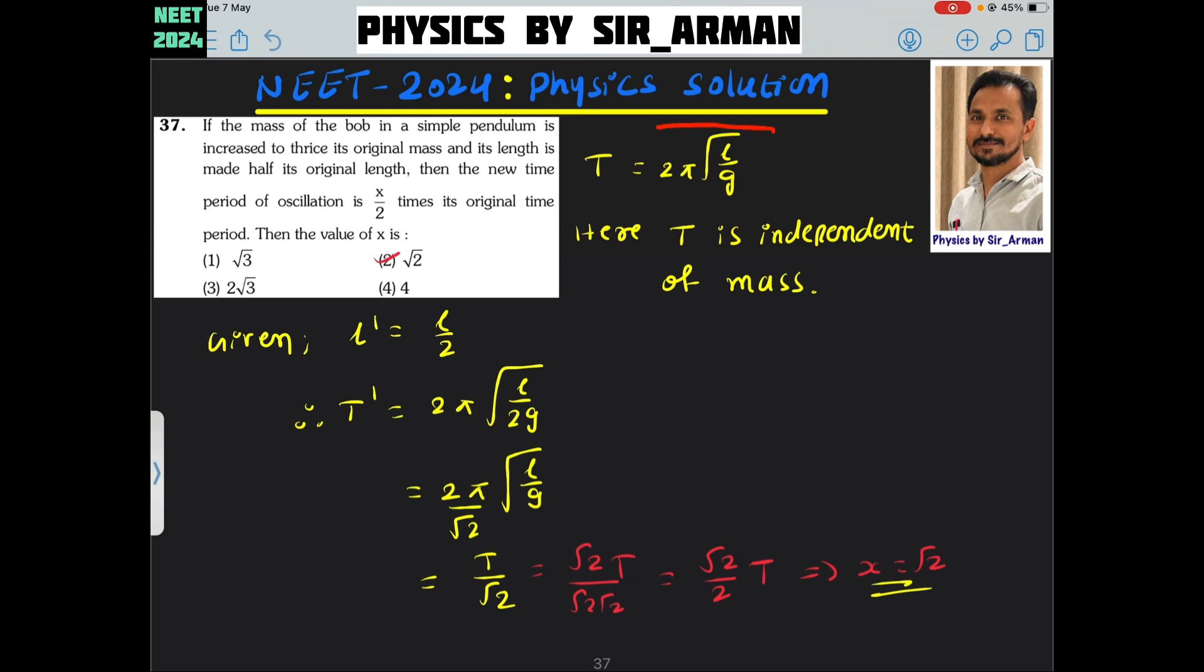in the equation of the time period of a simple pendulum, there is no mass involved, means it is independent of mass. For length, t is proportional to root l. So you can directly solve like this.